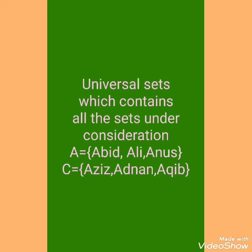Last one is Universal set — the set which contains all the sets under consideration. Here we have two sets. The consideration is that they are names of boys — Abid, Ali, Anas, Aziz, Adnan, and Akin — and they all start with A. So we consider them as names of boys starting with A. Hope you will learn all about these types of sets. We will meet in our next lecture when we solve exercise 1D. Till then, take care of yourself. Allah Hafiz.